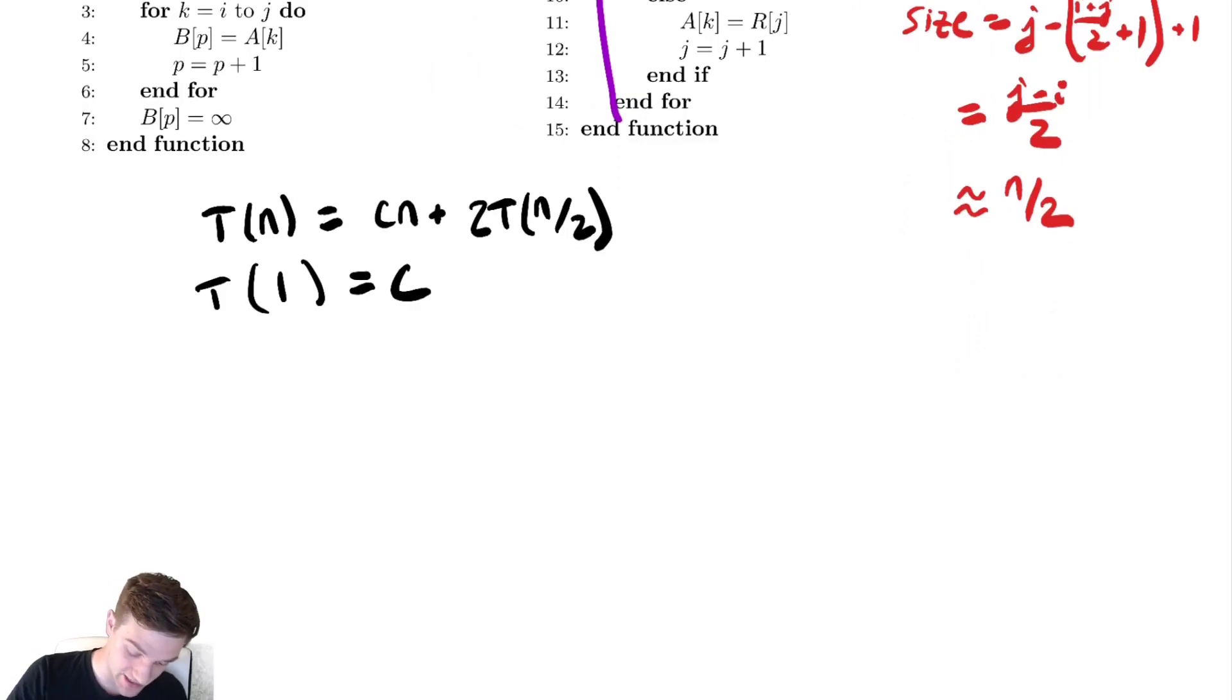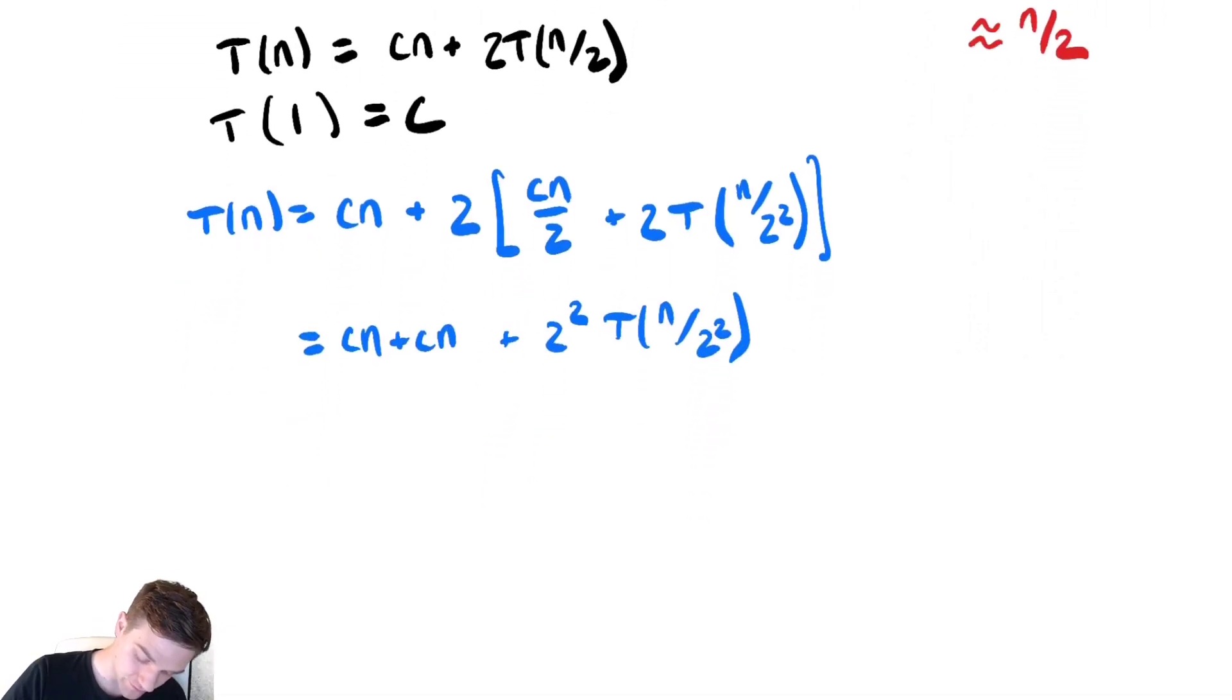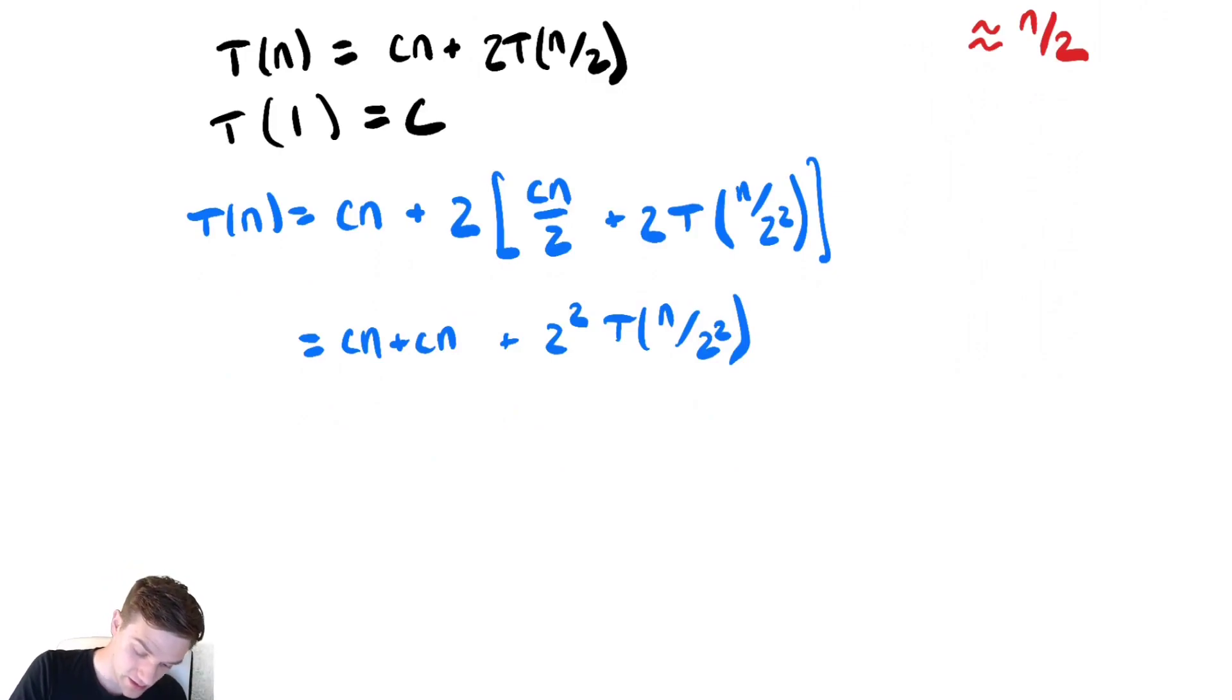Now let's do this by substitution. So T(n) is equal to cn plus two. Let's perform a substitution. And we get cn over two plus two T(n over two) over two, which is n over four. Or let's maybe write that as n over two squared to make it easier to identify patterns. This equals distribute that two and we get cn plus cn plus two squared T(n over two squared). I'm going to group those cn together. So let's do that. We have two cn.